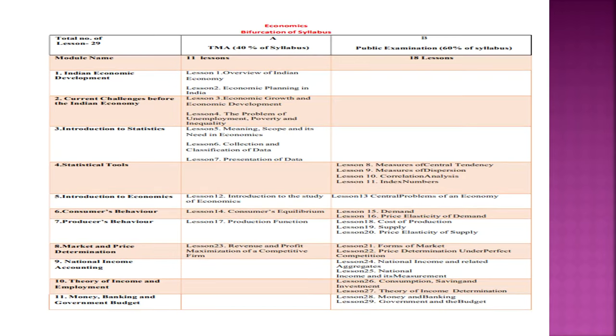The curriculum has been divided into two parts: Part A for TMA and Part B for public examination. 11 lessons will be assessed through tutor mark assignments carrying 20 marks weightage. 18 lessons will be assessed through the public examination, which is compulsory and carries 80 marks weightage.